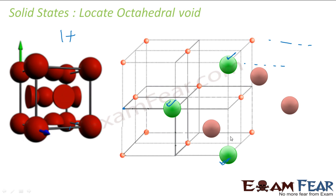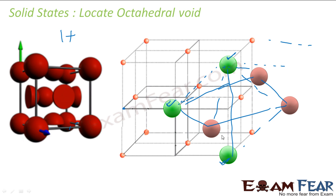These six will form one octahedral void. If you see this octahedral void, each of these will be shared by four cells because here there are four cells — one here, one here, one here, one exactly on the left, one exactly on the front of this, and one exactly on the front of this cell. So this particular void will be shared by four cells.